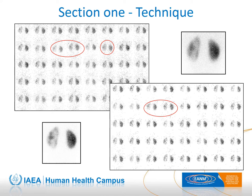This slide depicts an example of the above-mentioned procedure. At the top left, we see the raw dynamic sequence of a child with left kidney acute infection. The red circle represents the time at which movement occurred and a typical movement-induced blurred frame. The top right image depicts the result from the unprocessed sum of the 40 images. At the bottom right, the dynamic sequence after motion correction with automatic software is shown. The red circle shows the improved alignment of the previously misplaced frames. The bottom left image depicts the sum of the images after correction, clearly demonstrating better quality.